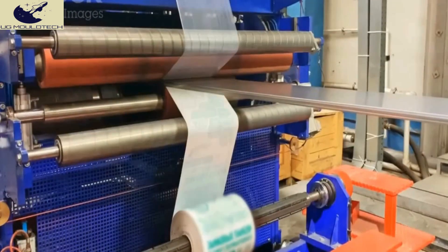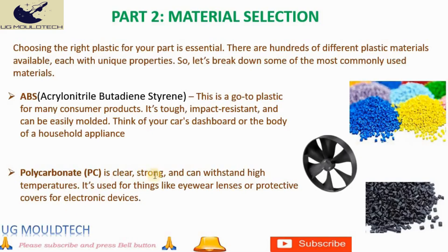Polycarbonate, on the other hand, is known for its high-impact strength and optical clarity. It's used in safety goggles, greenhouse panels, and even electronic device casings.